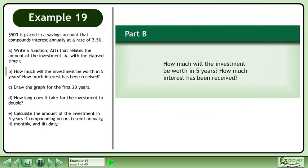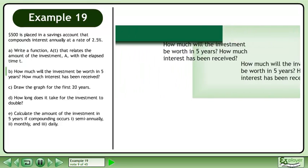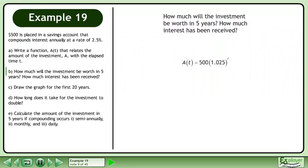Now we'll move on to Part B. How much will the investment be worth in 5 years? How much interest has been received? We write the function from Part A, A of t equals 500 times 1.025 raised to the power of t. Plug 5 years into the function.